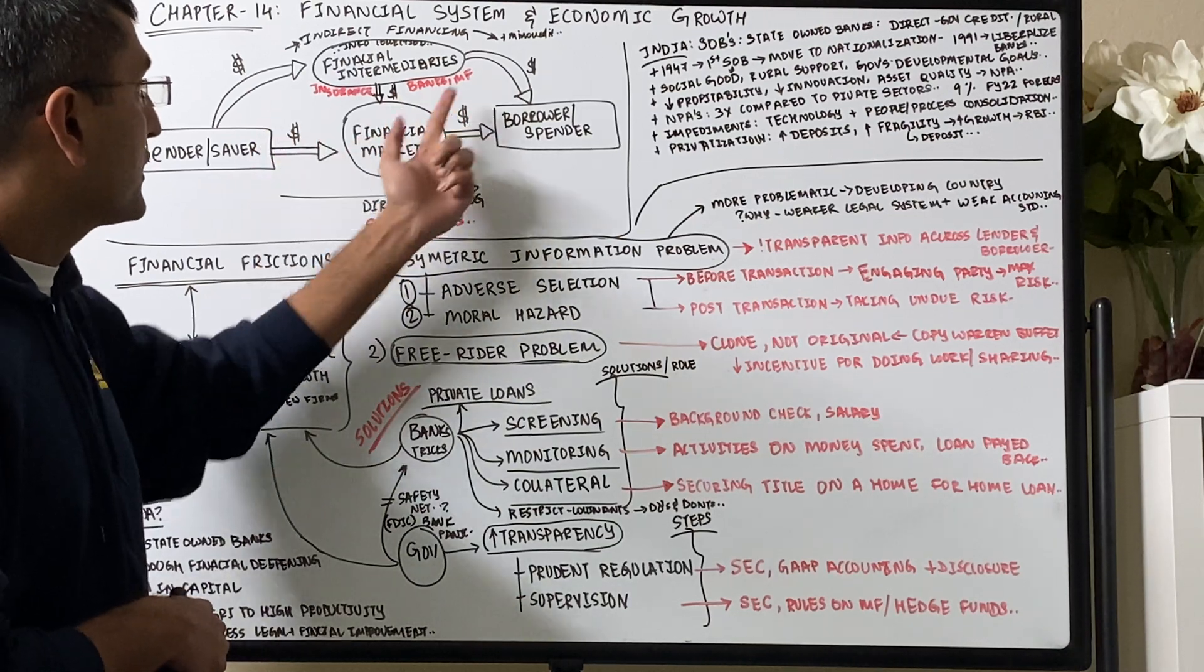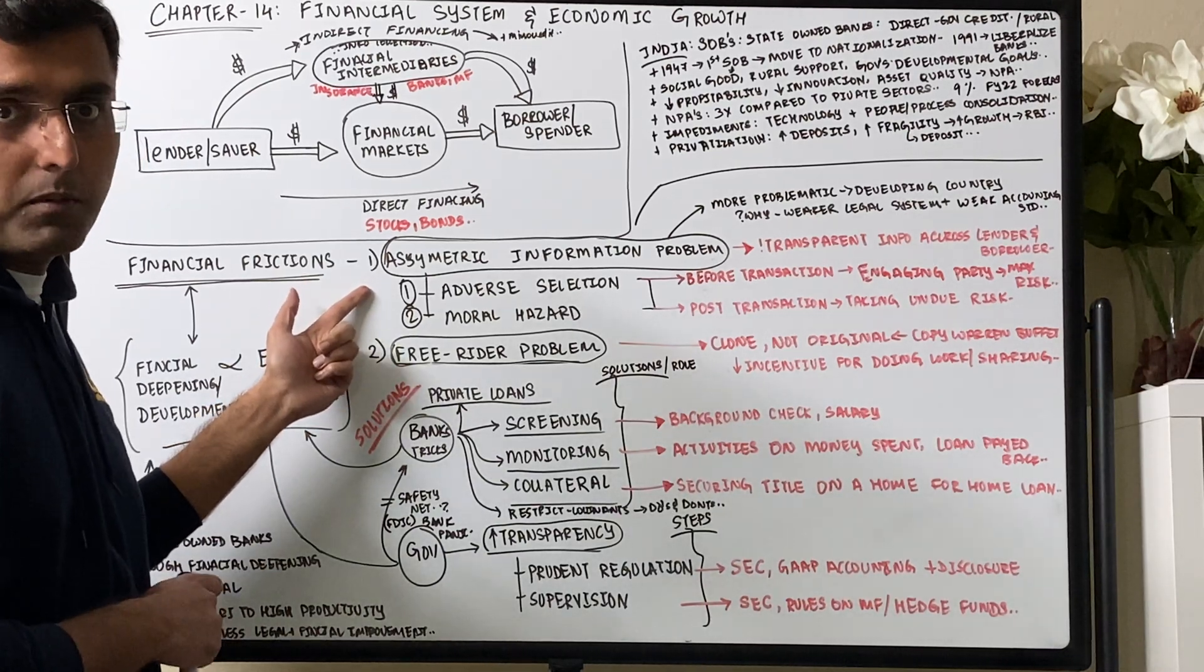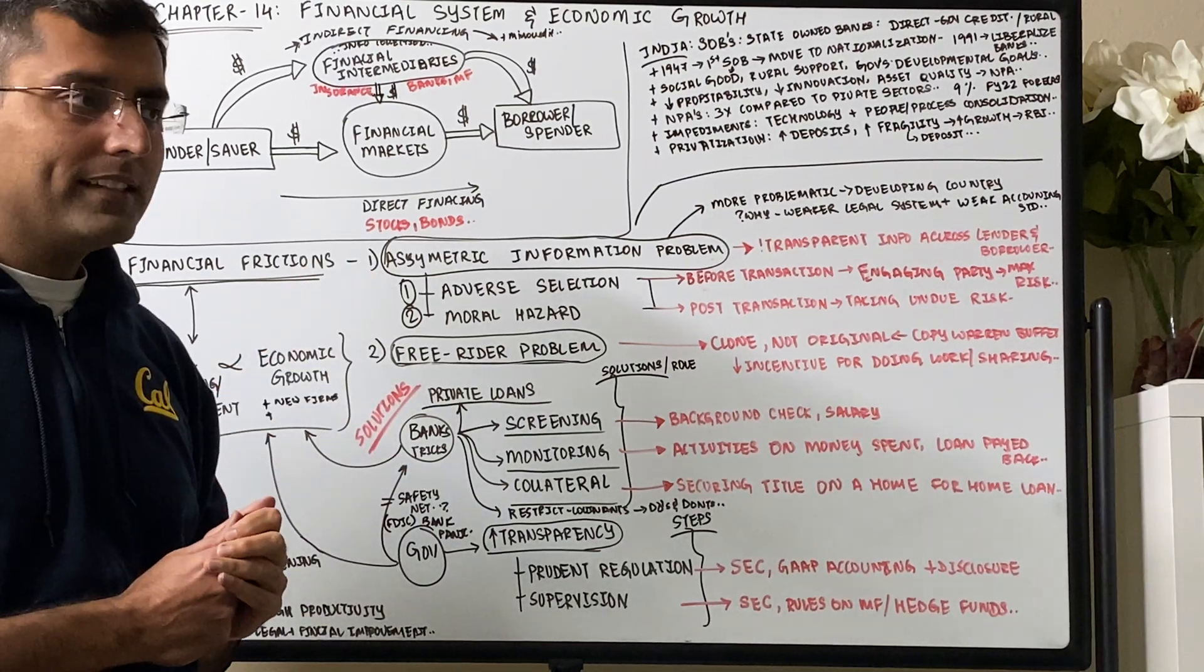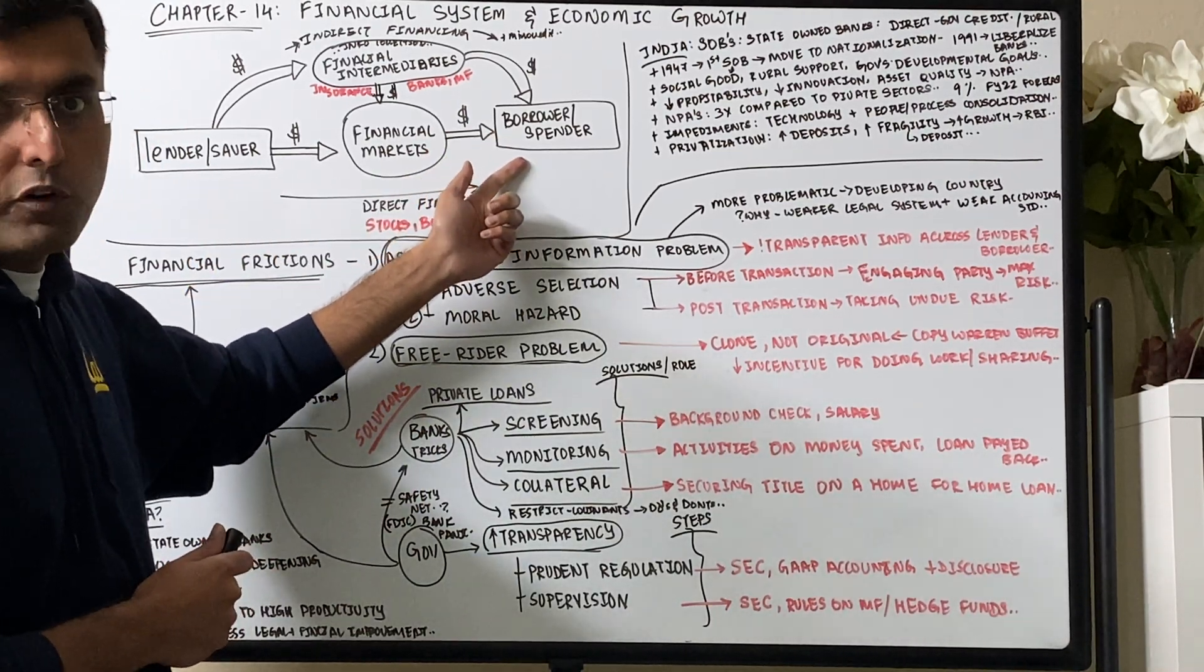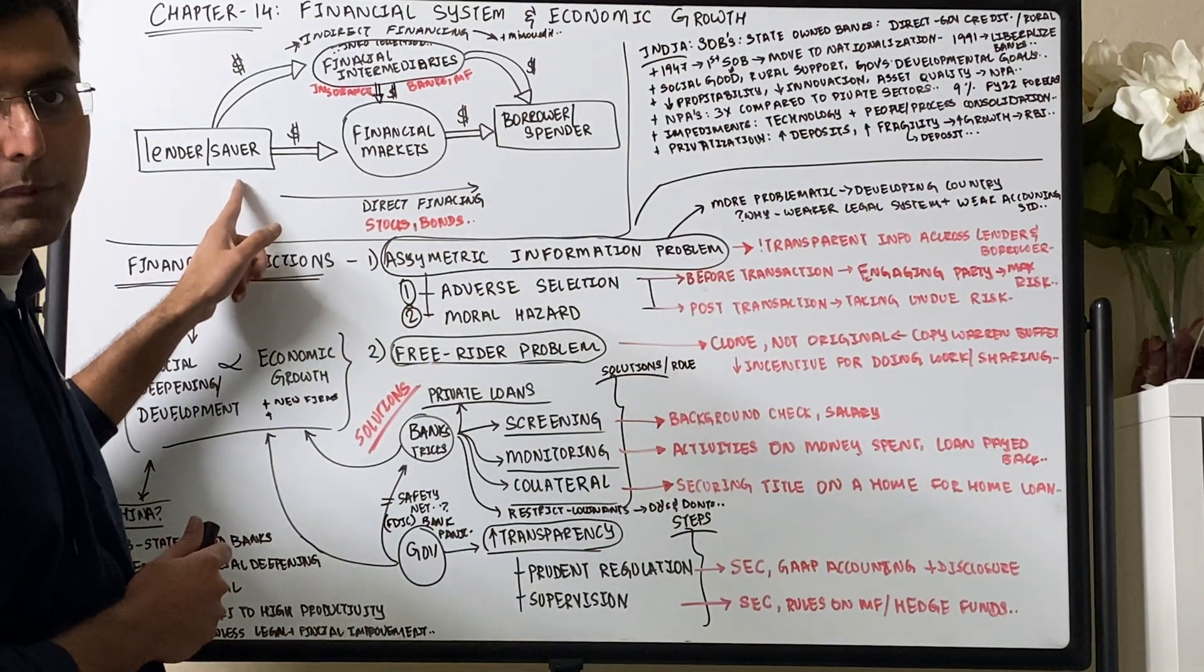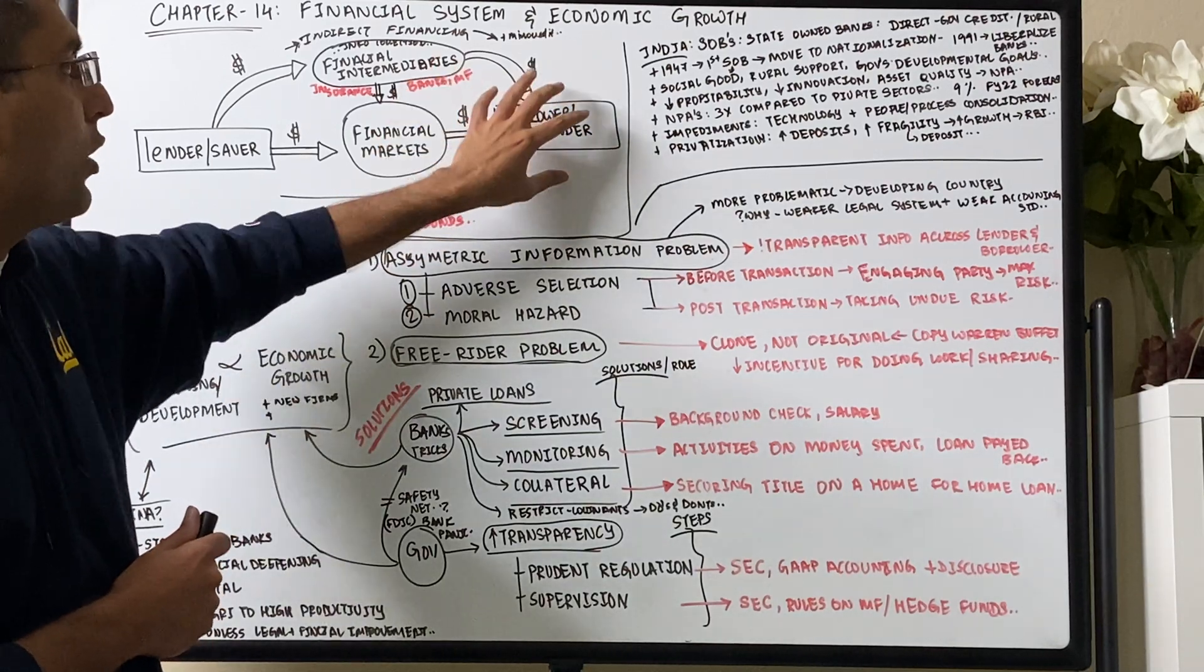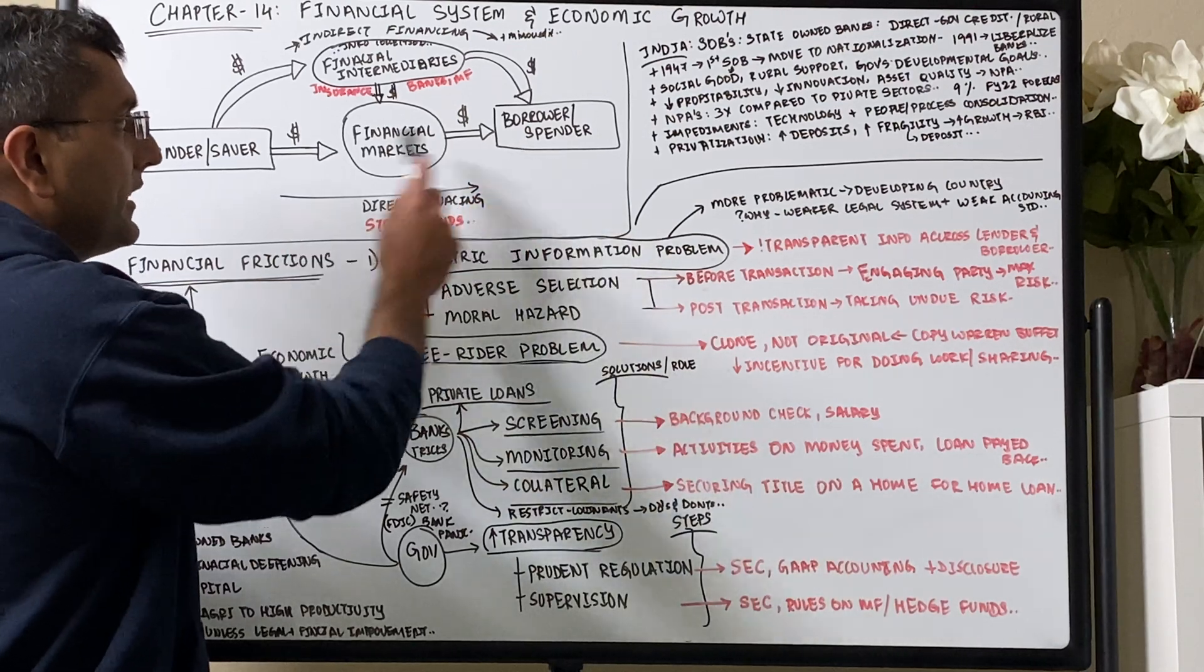There are two major friction points: asymmetric information problem and free rider problem. Asymmetric information problem is basically when the lender wants to give money to the best borrower, but the most risky borrower wants to get the lender's money too. So there is not enough transparency between the saver, the lender, and the borrower, the spender, as to what is the quality of each of these.